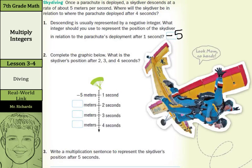Now, complete the graphic below. What is the skydiver's position after 2, 3, and 4 seconds? After 2 seconds, he went down another 5, so we're at negative 10, then negative 15, and another 5 is negative 20.